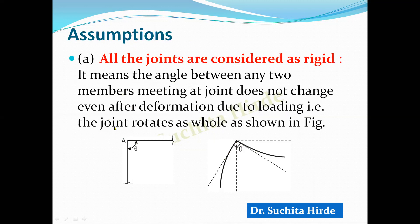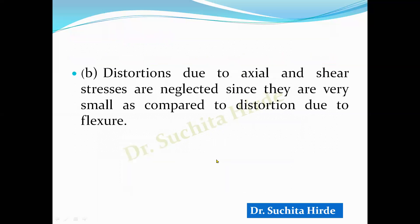So if the angle is 90 degrees, it will remain 90 degrees after deformation — that is the meaning of rigid joints. Second assumption: distortions due to axial and shear stresses are neglected, since they are very small compared to distortion due to flexure. Therefore, while calculating the degree of kinematic indeterminacy, we neglect axial deformation.